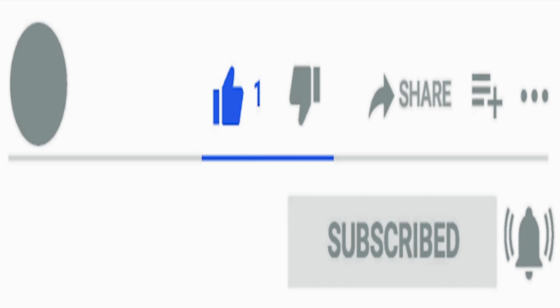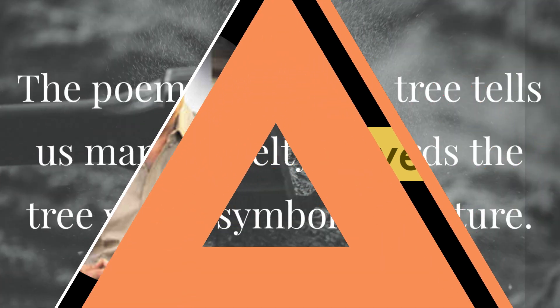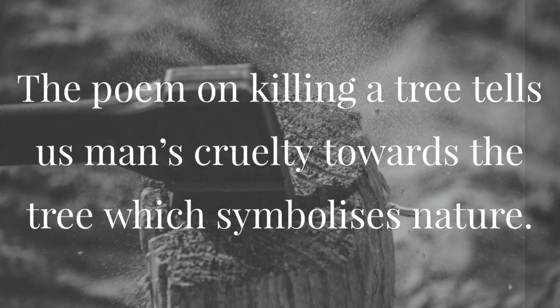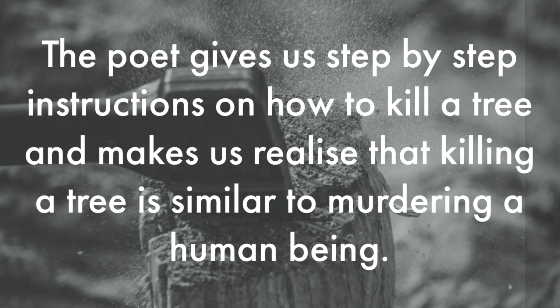The poem 'On Killing a Tree' is written by the poet Gieve Patel. The poem tells us about man's cruelty towards the tree, which symbolizes nature. The poet gives us step-by-step instructions on how to kill a tree and makes us realize that killing a tree is similar to murdering a human being.